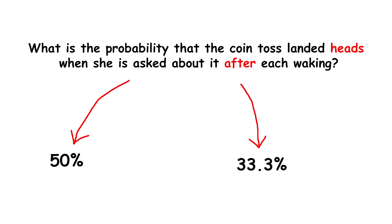The other camp argues it should be one third, about 33.3%, because there are three scenarios. Heads on Monday, tails on Monday, and tails on Tuesday.